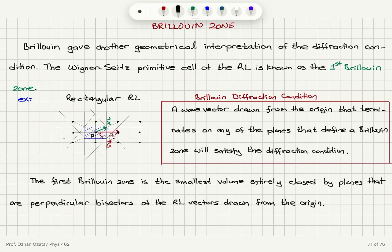Our way of defining the diffraction condition using Bragg's Law works in the direct lattice, while the Von Laue diffraction condition works in the reciprocal lattice. If we look at the reciprocal lattice picture — the Ewald construction — we can obtain another diffraction condition using the concept of the Brillouin zone.